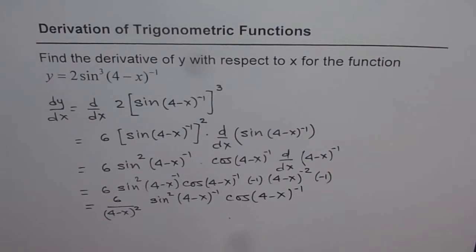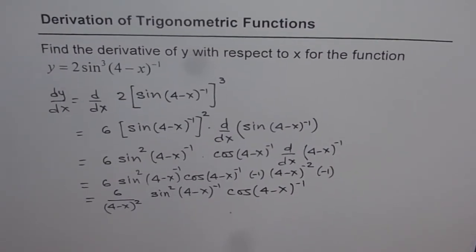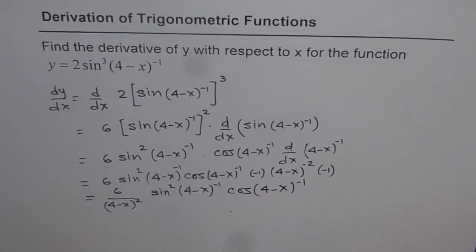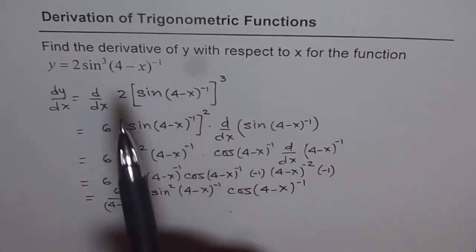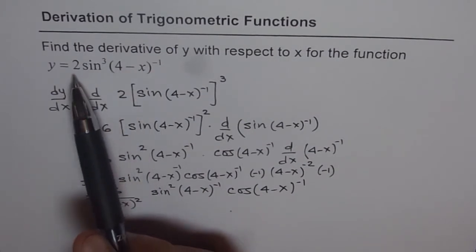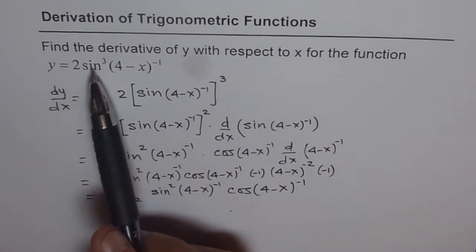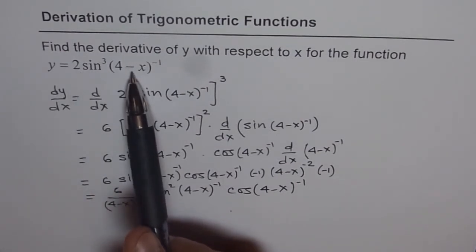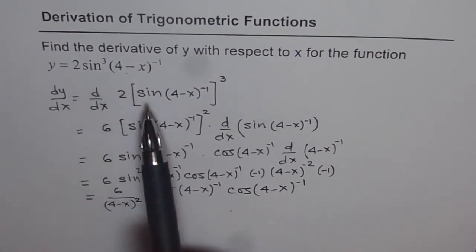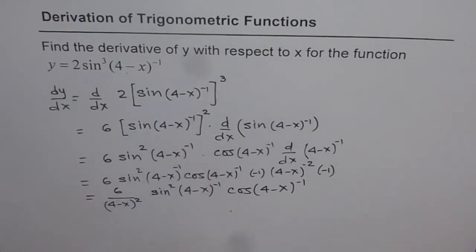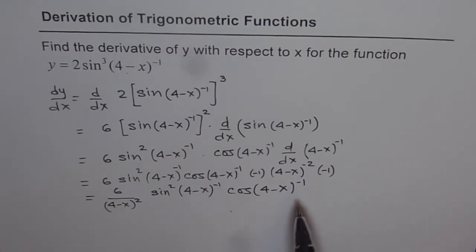So that is our final answer. Have a good look at it and go through these steps once again to see how we have applied the chain rule one after the other. Basically, we found the derivative of this function: it is 2 times — first with sin cubed, so 3 times sin squared of the whole function, times the derivative of the inside function, which was sin of 4 minus x to the power of minus 1, and then again the inside function. That is how you can solve these questions.